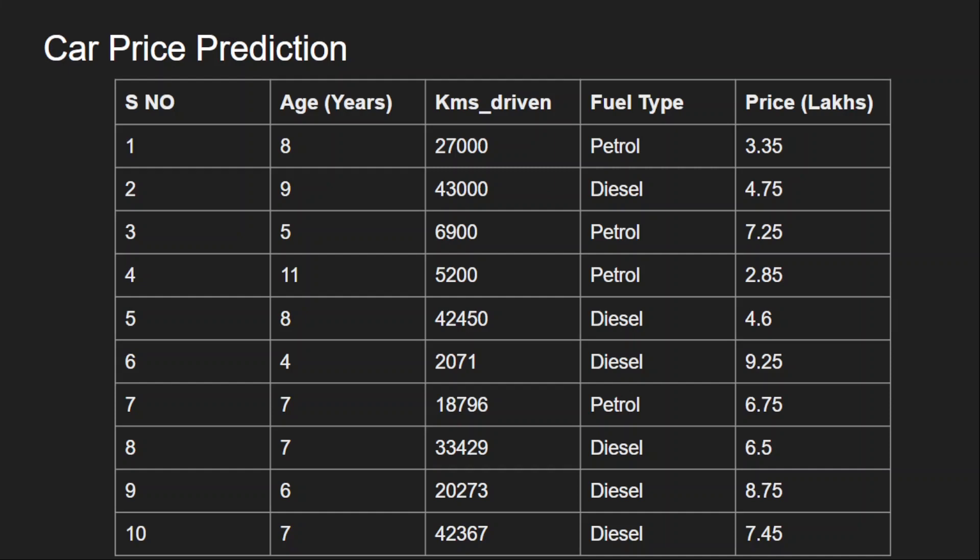This is a supervised problem, so our dataset has target selling price for each example. The output required is the selling price, which is a real number. It's not a probability score. That's why this comes into regression task. The input features are age of the car, the kilometers driven so far, and the fuel type. Based on these three input features, we need to estimate the selling price of the car.